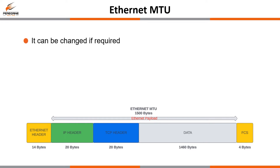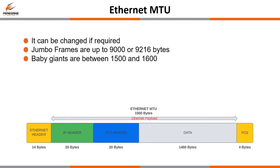The MTU can be changed if required to account for larger payloads. If it's increased up to 1600 bytes it's considered to be a baby giant. There are both pros and cons for changing to a larger MTU value. Having a larger MTU increases network efficiency because you are sending fewer headers, wasting fewer bytes on the wire, and ultimately achieving higher throughput. If you think of it like a delivery company, it's like sending a large pallet full of stuff rather than many smaller items with separate deliveries.